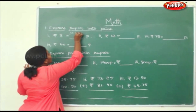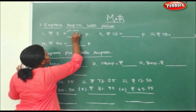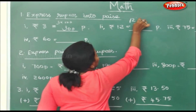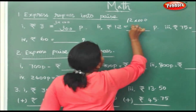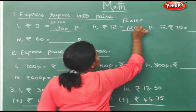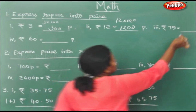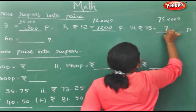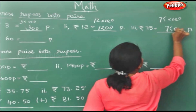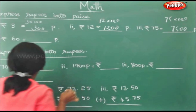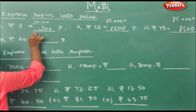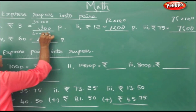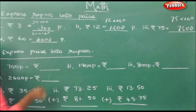So 3 into 100, which is 300. 12 into 100 — bring the 2 zeros down, giving 1200. 75 into 100 gives 7500. 60 into 100 gives 6000 paise.